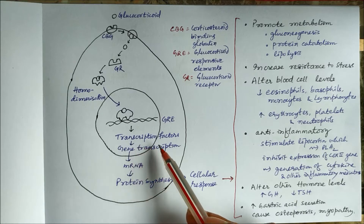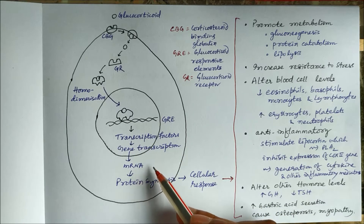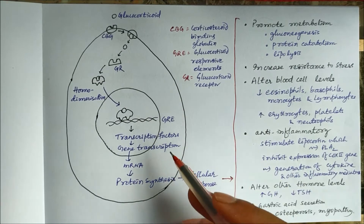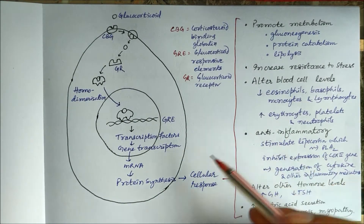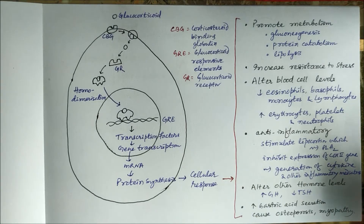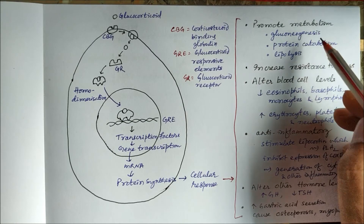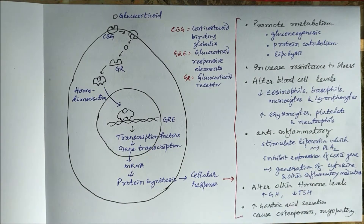The receptor complex binds to glucocorticoid responsive elements and induces the synthesis of transcription factors. Gene transcription occurs, mRNA is produced, and specific proteins are either synthesized or inhibited. If there is stimulation of gene transcription, proteins are synthesized; if there is inhibition, they are suppressed, leading to a cellular response.